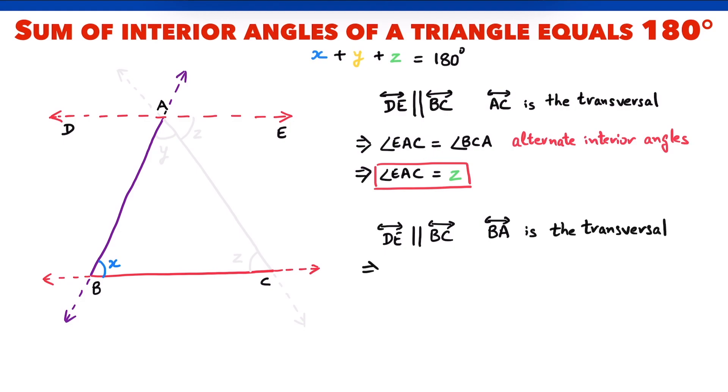As before, angle DAB equals angle CBA. Alternate interior angles are equal, so angle DAB is equal to X.